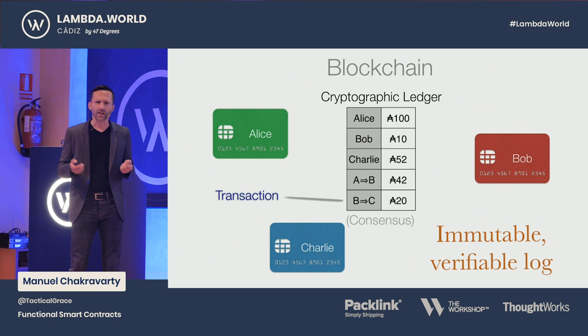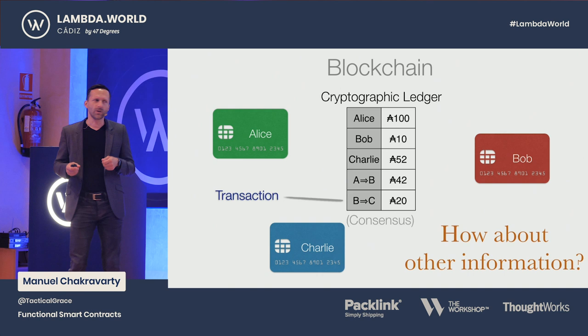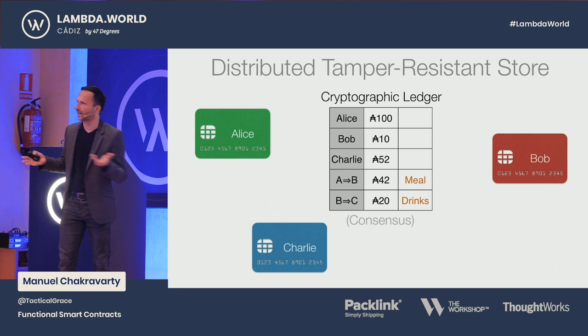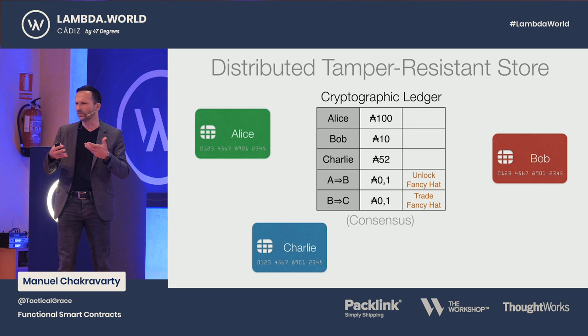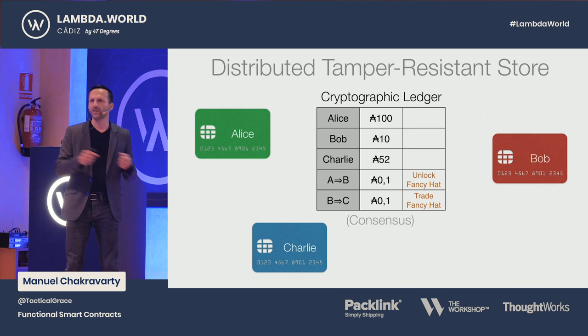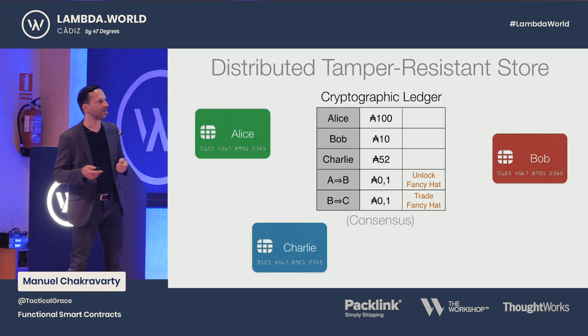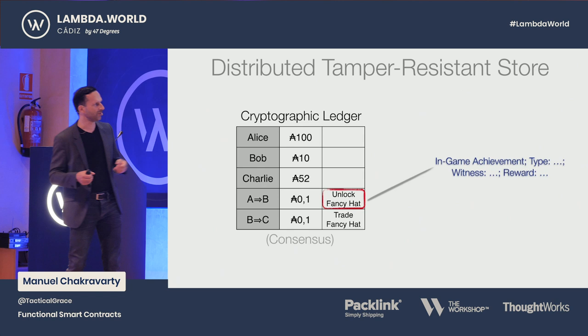Now, if you've got such a data structure, maybe we can do something more interesting with it than just record monetary values on it. For starters, we could associate some metadata with those transactions — like why did we make this transaction? Or we can do something even more exciting and actually only use the monetary aspect of the ledger as a means to operate it and store completely different data on it. So let's take the example of an online multiplayer game. These days, the way they're monetized is not by selling the game, but by having in-game artifacts which you get for specific achievements, and then the users can trade them.